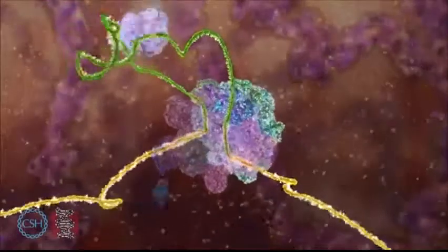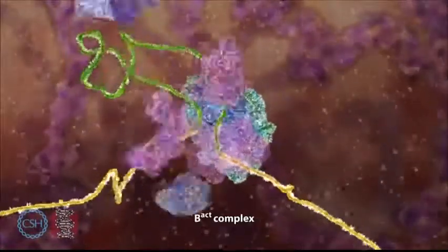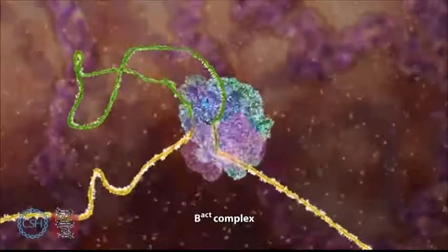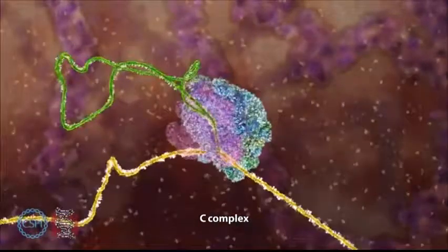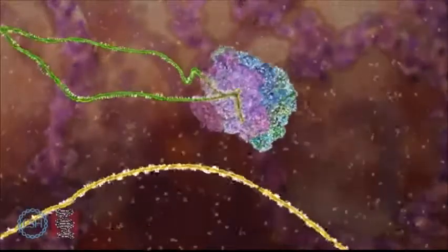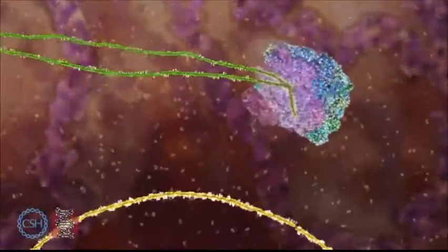The splicesome then brings the exons on either side of the intron very close together, ready to be cut. One end of the intron is cut and folded back on itself to join and form a loop. The splicesome then cuts the RNA to release the loop and join the two exons together.